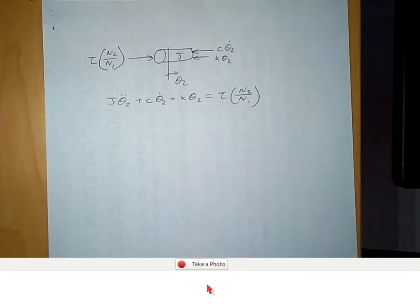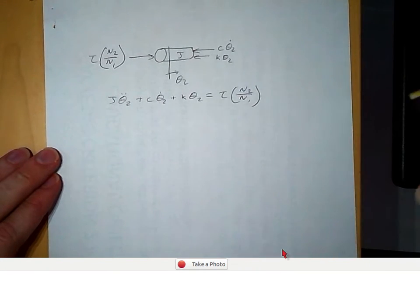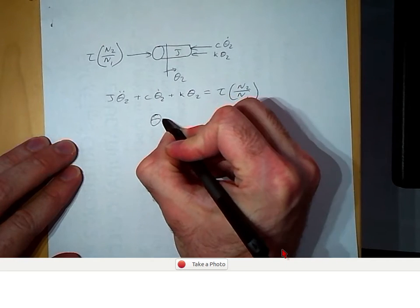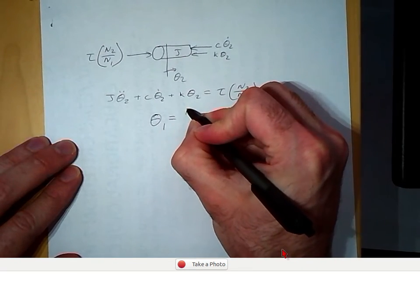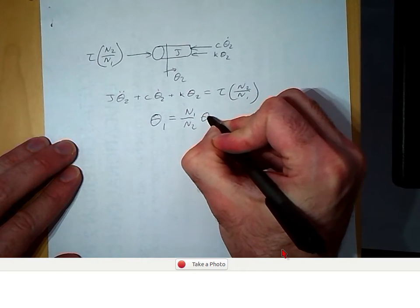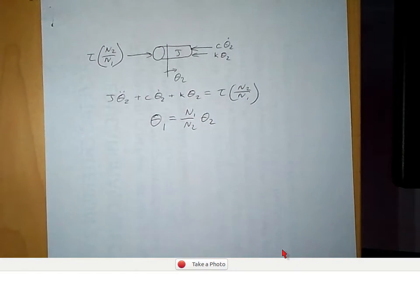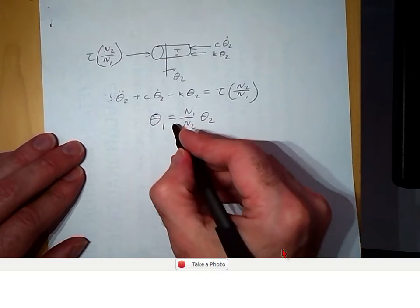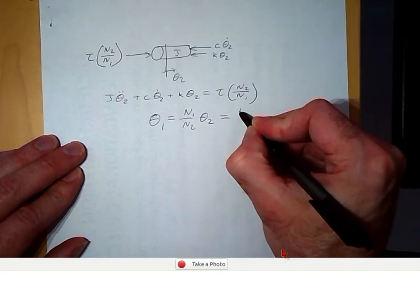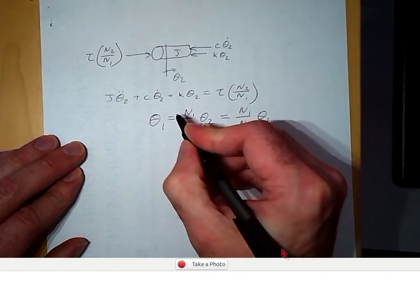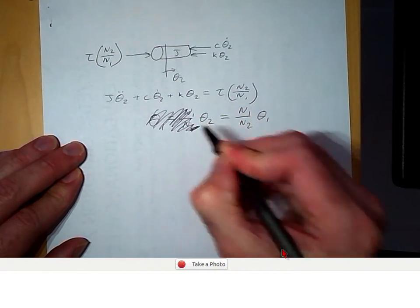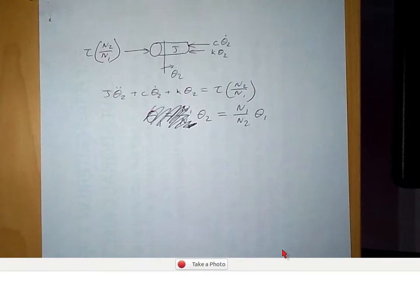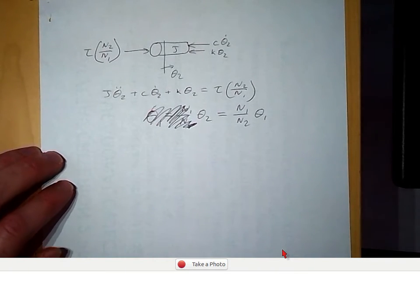To get the equivalent system seen at the input shaft, we substitute theta 1 for theta 2. Using the gear ratio definition, theta 2 equals N1 over N2 times theta 1. We substitute this in for theta 2 and rearrange to get our equivalent system.